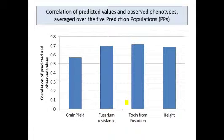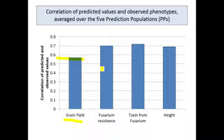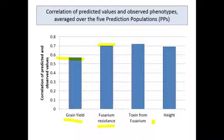Looking at the results, averaging across the five prediction populations: for grain yield, the correlation of the phenotypes of those lines with their predicted values was about 0.57, which is pretty good for yield — genomic selection worked well here in predicting phenotypes. For resistance to Fusarium head blight, the accuracy of genomic selection was about 0.7, which is really good. Across the other traits assessed, the models built on the training population were able to predict the phenotypes in these progeny sets pretty well.